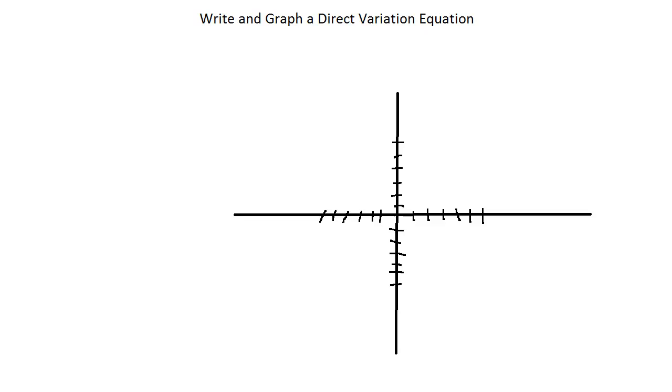All right, today we are going to be writing and graphing a direct variation equation, and we're going to choose to graph an equation that passes through this point. Let's see, negative 4, comma 2.